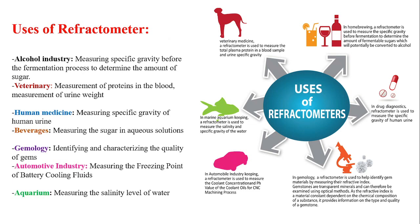There are multiple uses of refractometer. It is used in alcohol industry for measuring the specific gravity before the fermentation process to determine the amount of sugar present in the alcohol. It is also used in veterinary sciences for measurement of proteins in the blood and measurement of urine weight. It is also used in human medicine for measuring specific gravity of human urine. It is used for measuring the sugar in aqueous solutions, for identifying and characterizing the quality of gems, and also in measuring the freezing point of battery cooling fluids in the automotive industry.